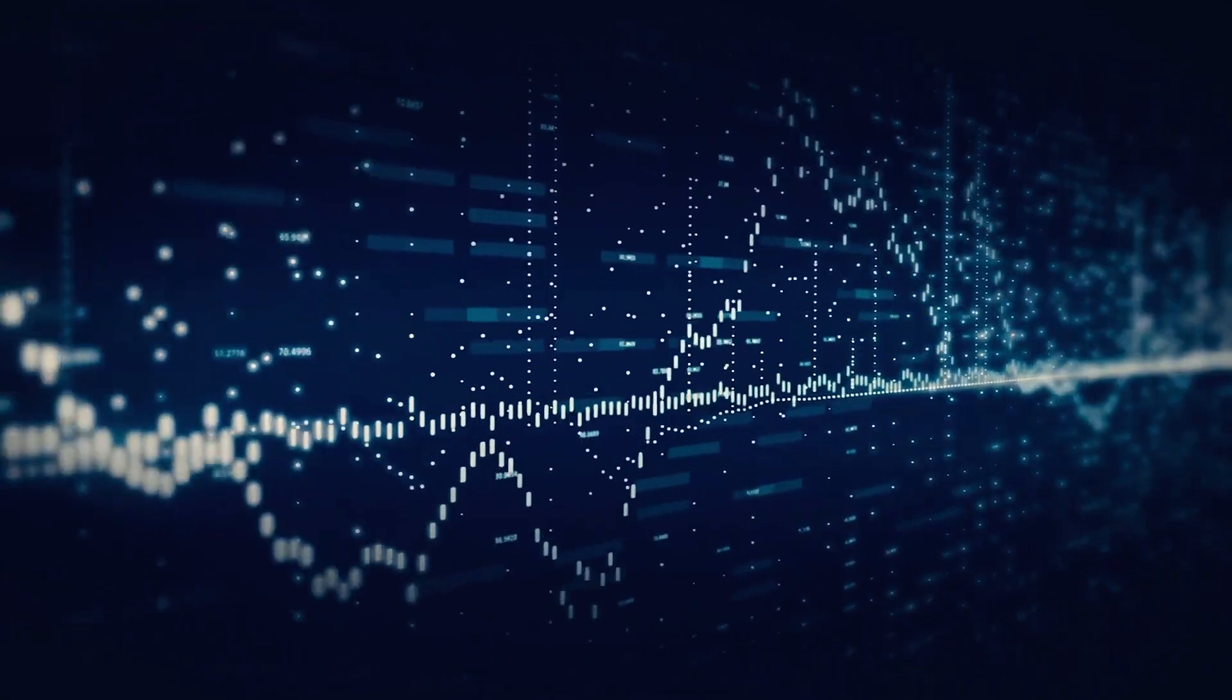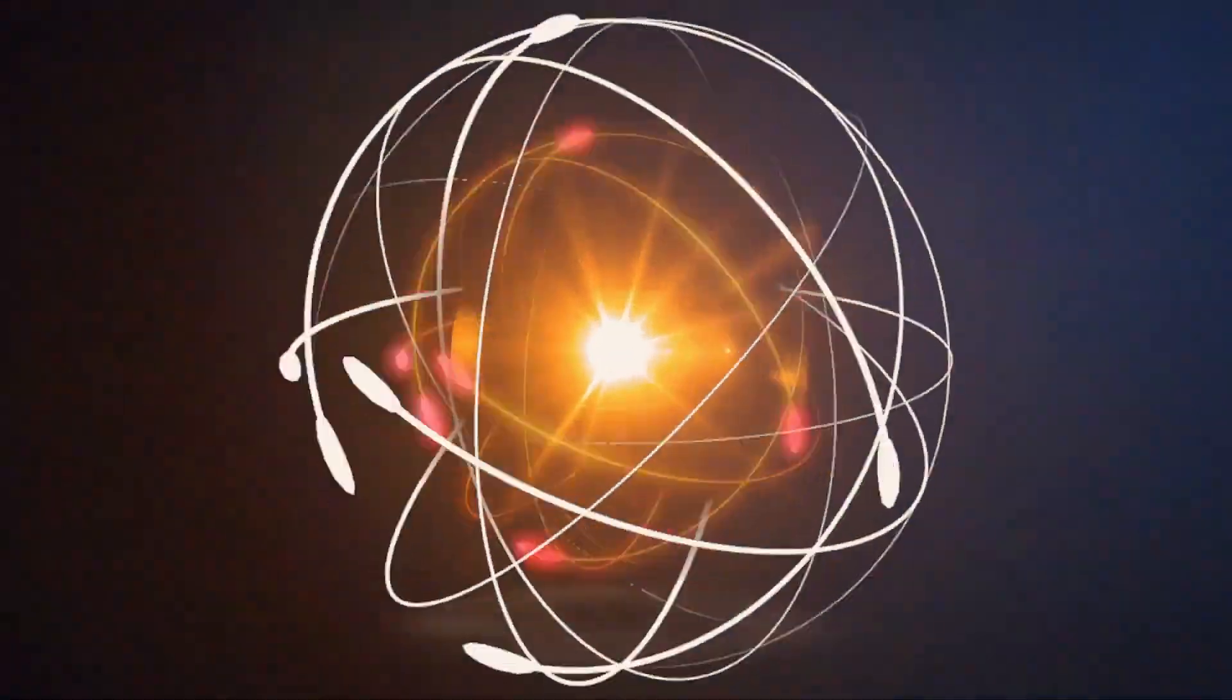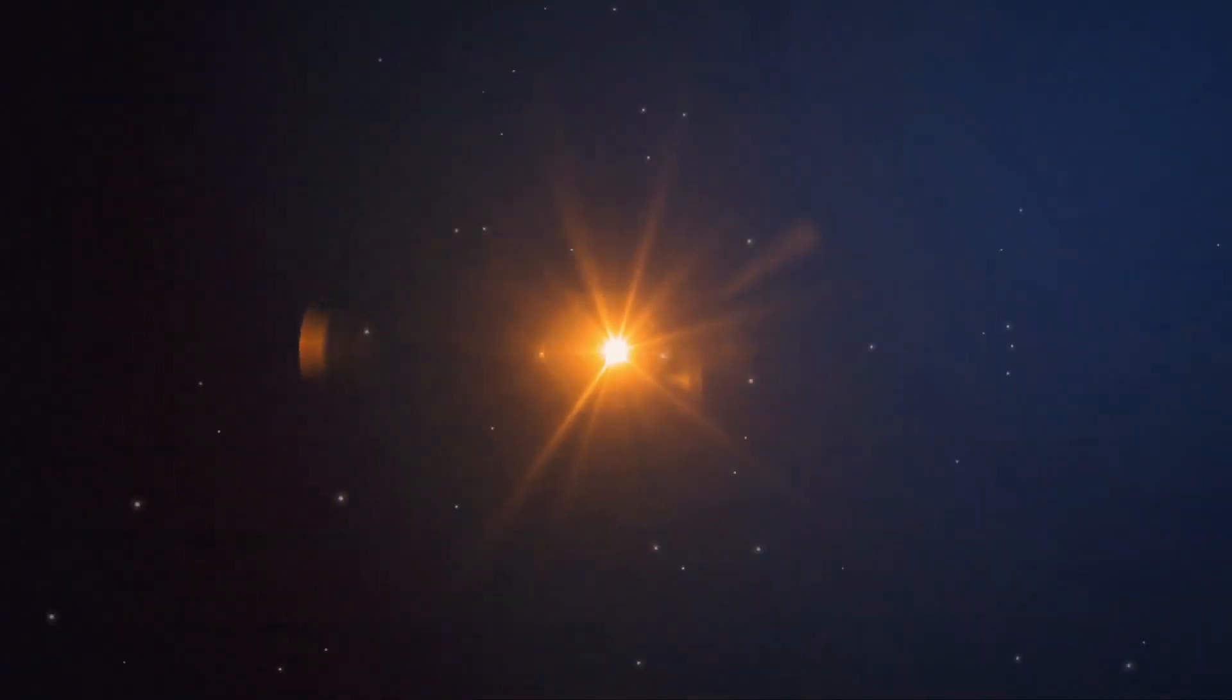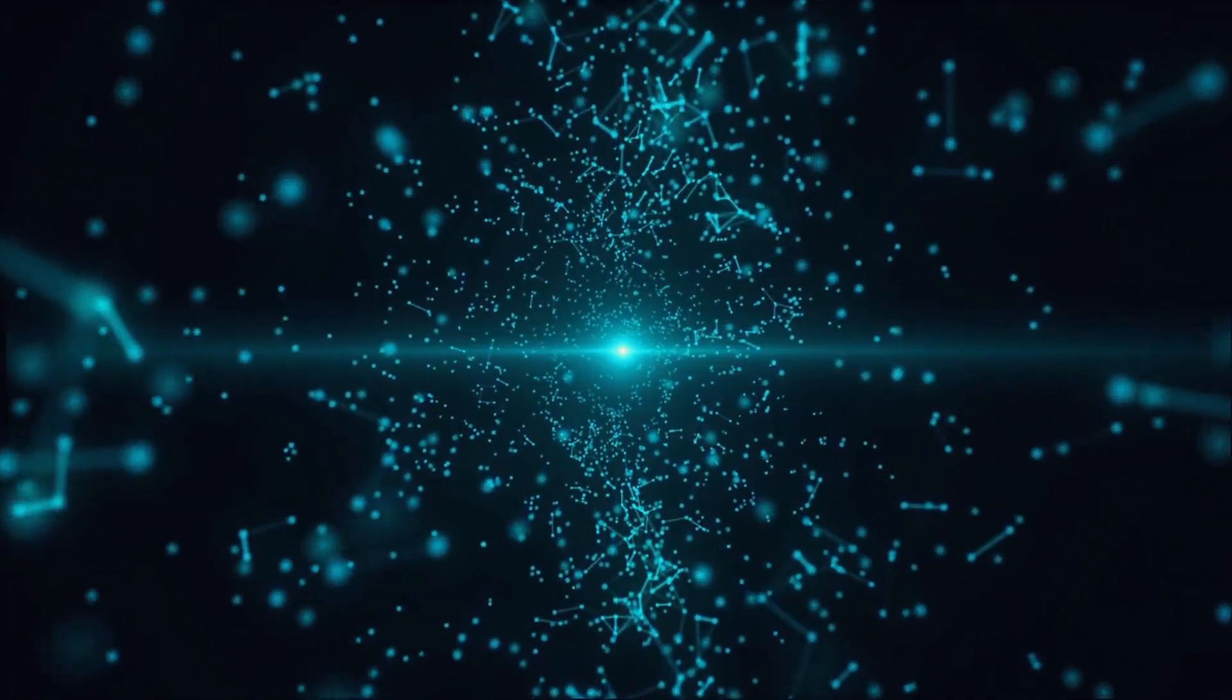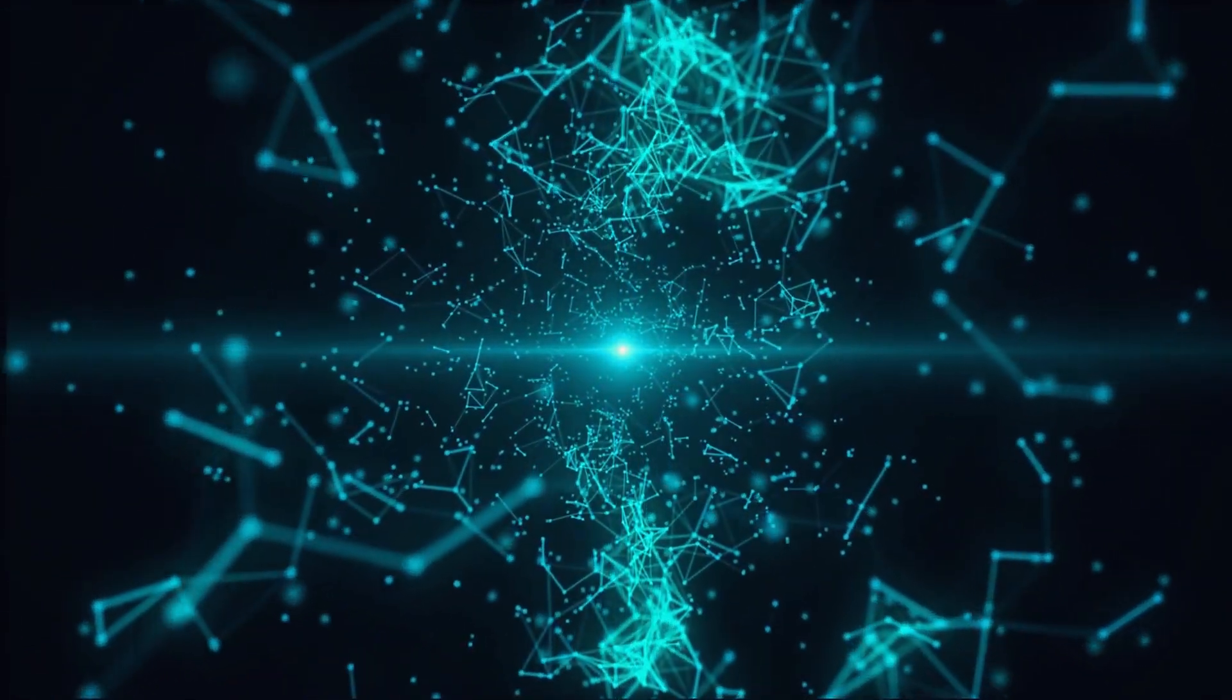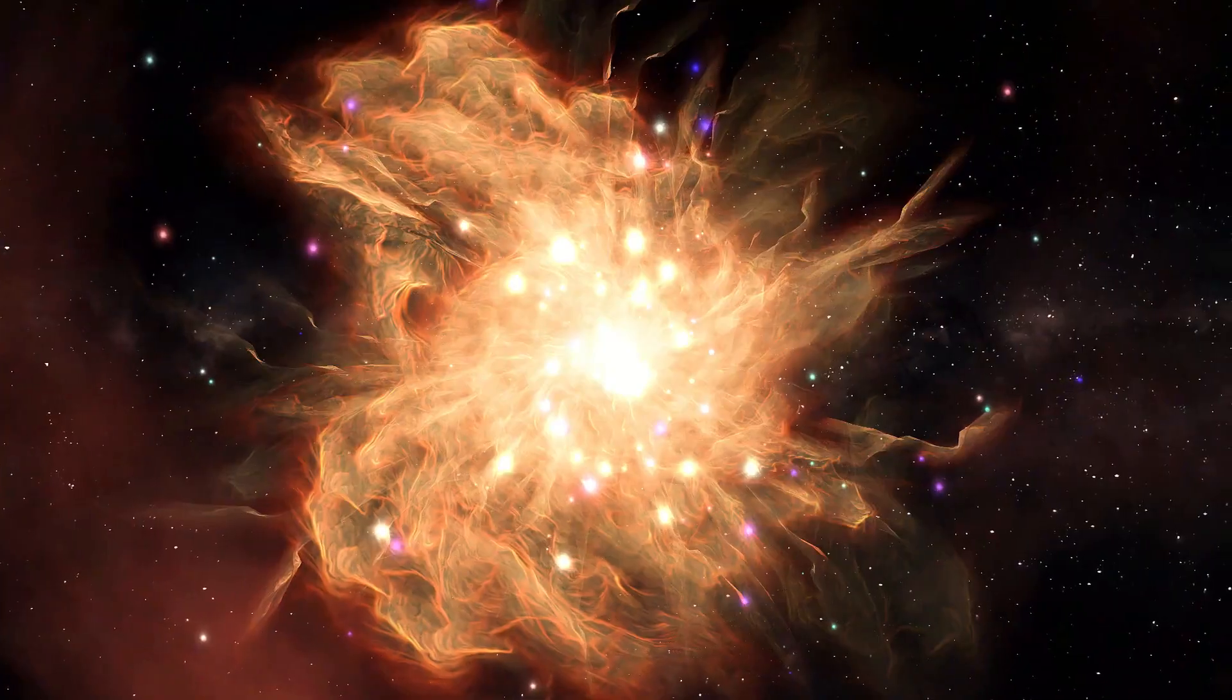String theory allows you to rotate particles into each other, turning electrons into neutrinos, neutrinos into quarks. And the theory remains the same. That is the symmetry of the string. And that's why it's so powerful. A simple idea that encapsulates the entire universe.